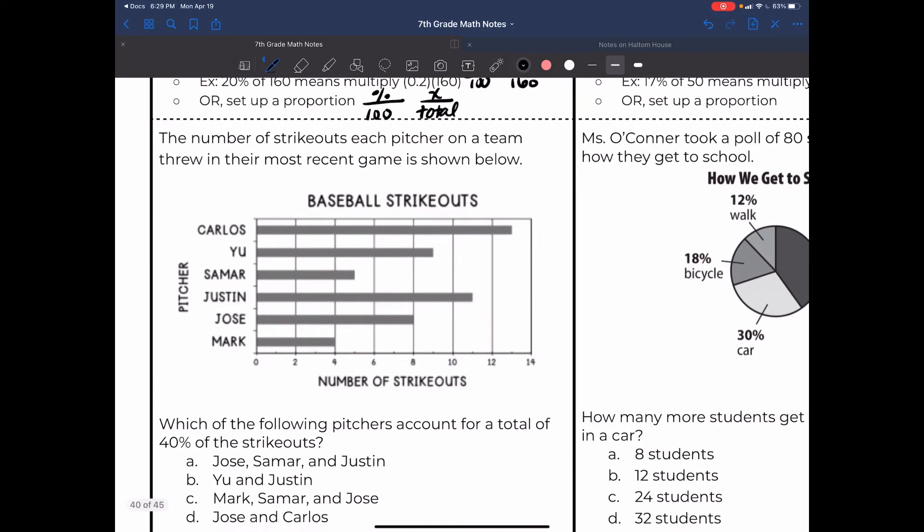Let's get into some example questions. The number of strikeouts each pitcher on a team threw in their most recent game is shown below. So here's our graph, we have the baseball strikeouts, we have pitchers on the left-hand side over here, and then the number of strikeouts on the bottom. Before I even get to the question and answer choices, I like to read everything that I can possibly read from the graph. For instance, Carlos - I don't know my total, but I know the total of each player, and I want to make it a bit easier for me to read the total of each player. So I like to write the total at the end of each thing, like on a dot plot it would be at the top of the tower.